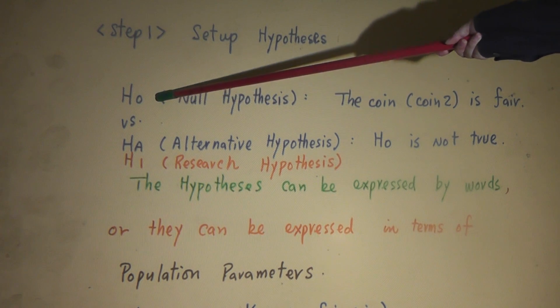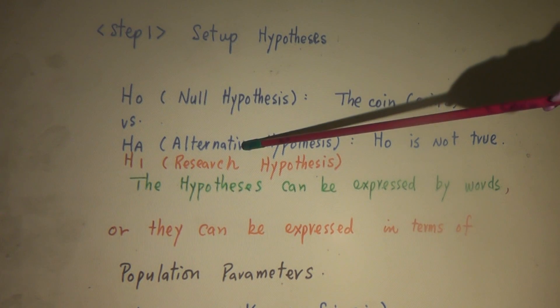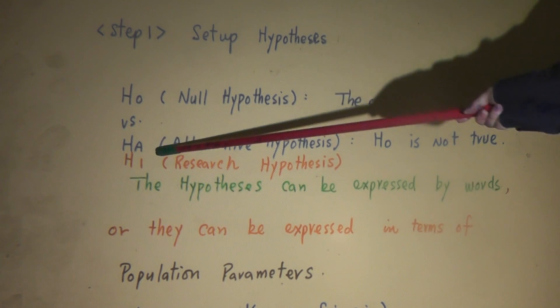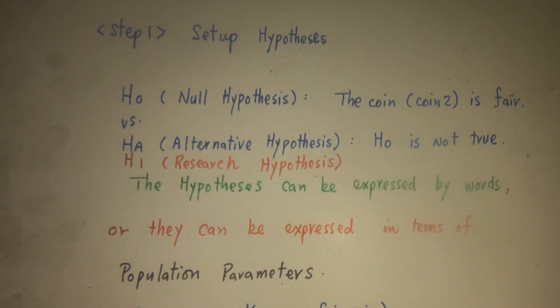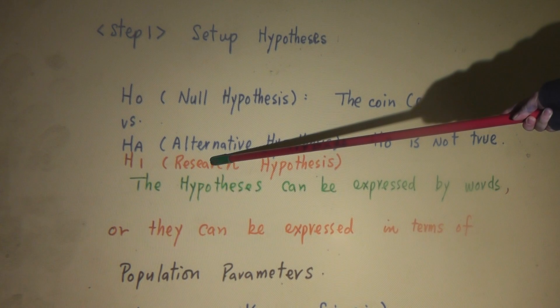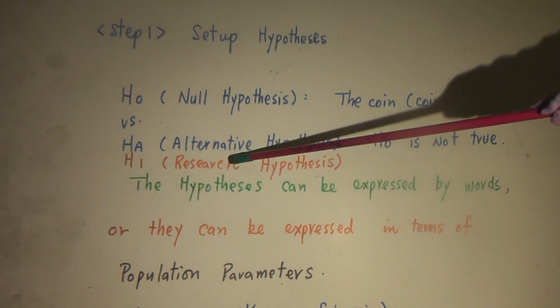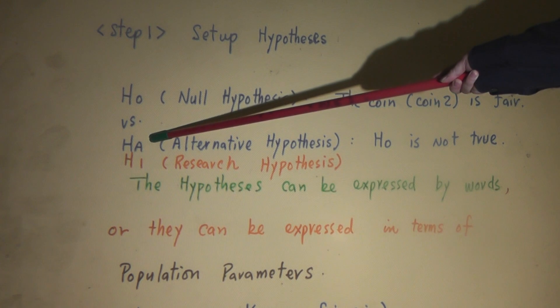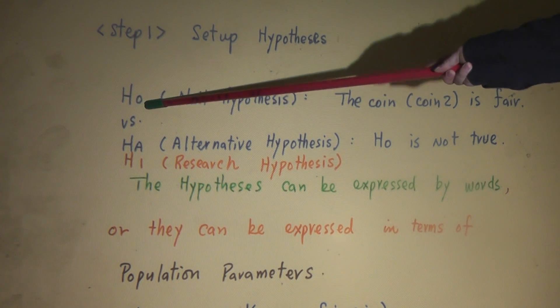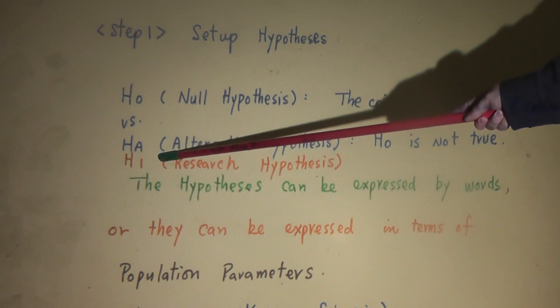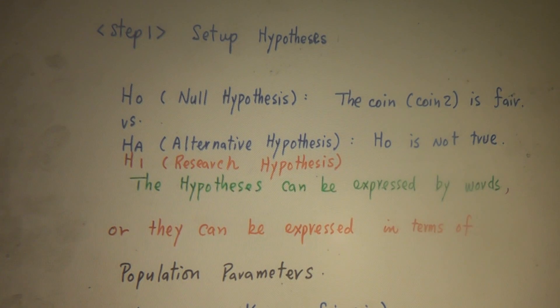And they are null hypothesis, denoted by H0, or alternative hypothesis denoted by HA. You take the first letter, A, HA. Sometimes people don't call it alternative hypothesis. For example, our textbook, they call HA or H1 research hypothesis. Some books, they don't put HA, they put it as H0 or H1. So HA and H1, they are the same, no difference.